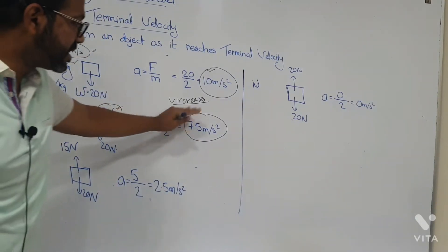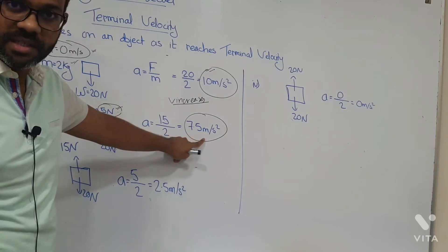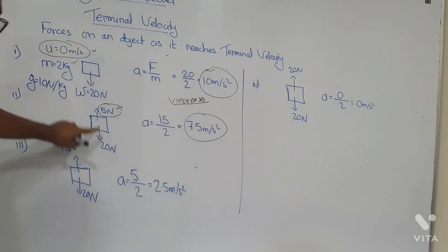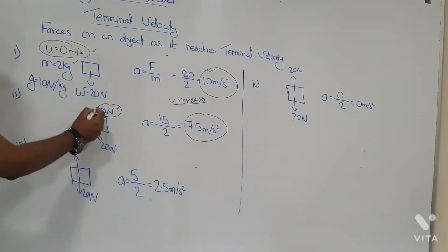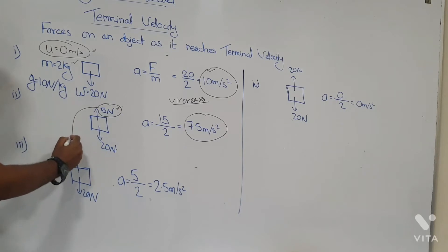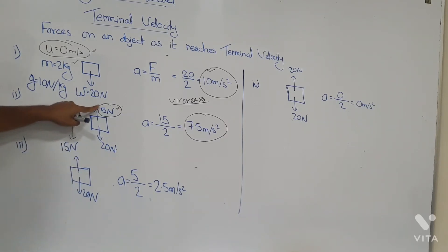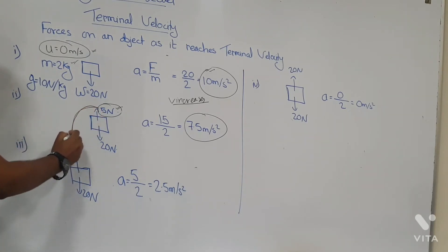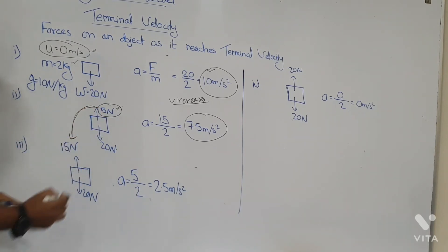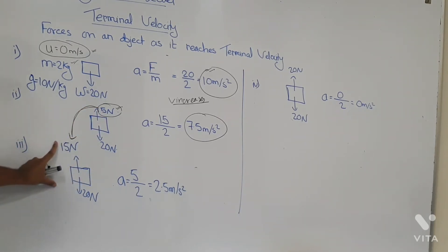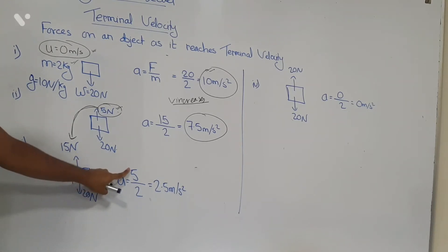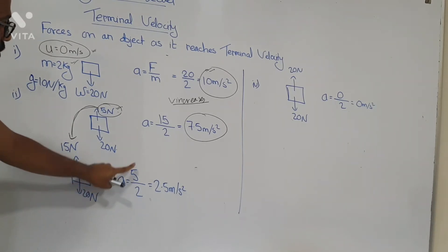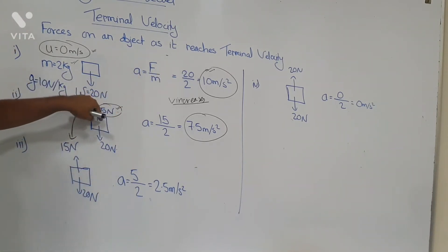Since its velocity is still increasing, the air resistance on the object will also increase — it was 5 Newtons before, now it is 15 Newtons. So the air resistance increases. The resultant force on the object is now only 5 Newtons.